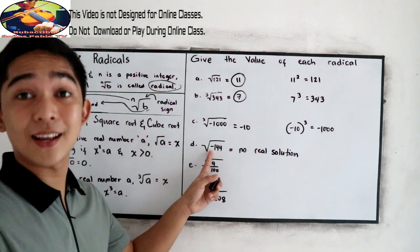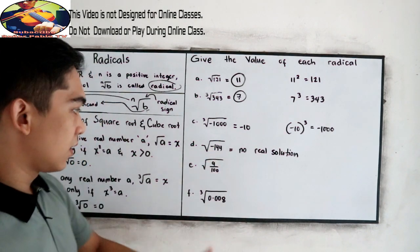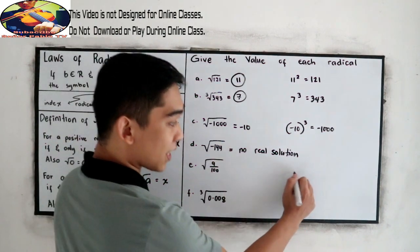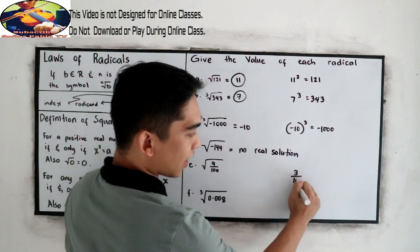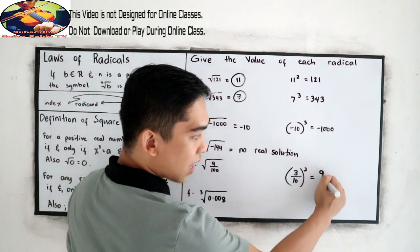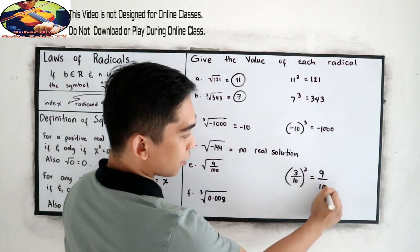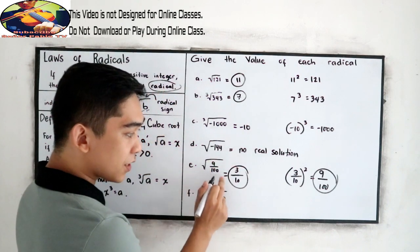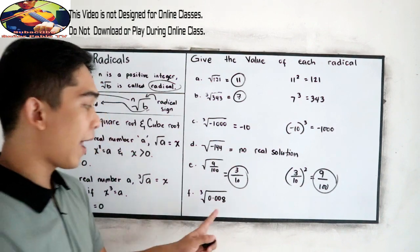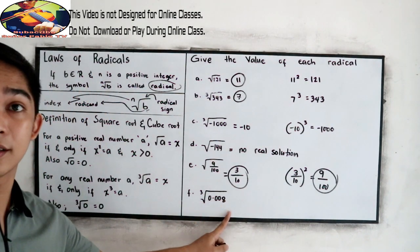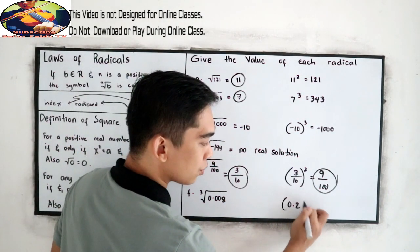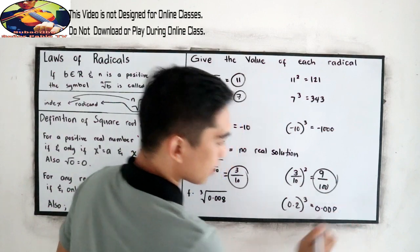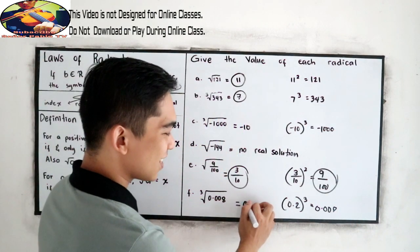Why no real value? Because this will lead us to imaginary numbers. Next, letter E: square root of 9 over 100. This can be written as 3 over 10 raised to the 2nd power — 3 squared is 9, over 10 squared is 100. So the value of square root of 9 over 100 is 3 over 10. And last, cube root of 0.008 — that is 0.2 cubed, since 0.2 times 0.2 times 0.2 equals 0.008. Therefore our value is 0.2.